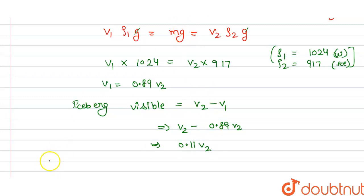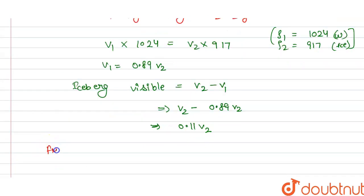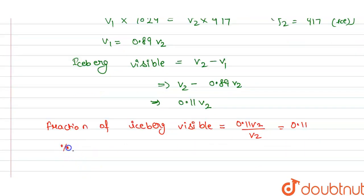This equals 0.11V₂, divided by V₂, which gives 0.11.